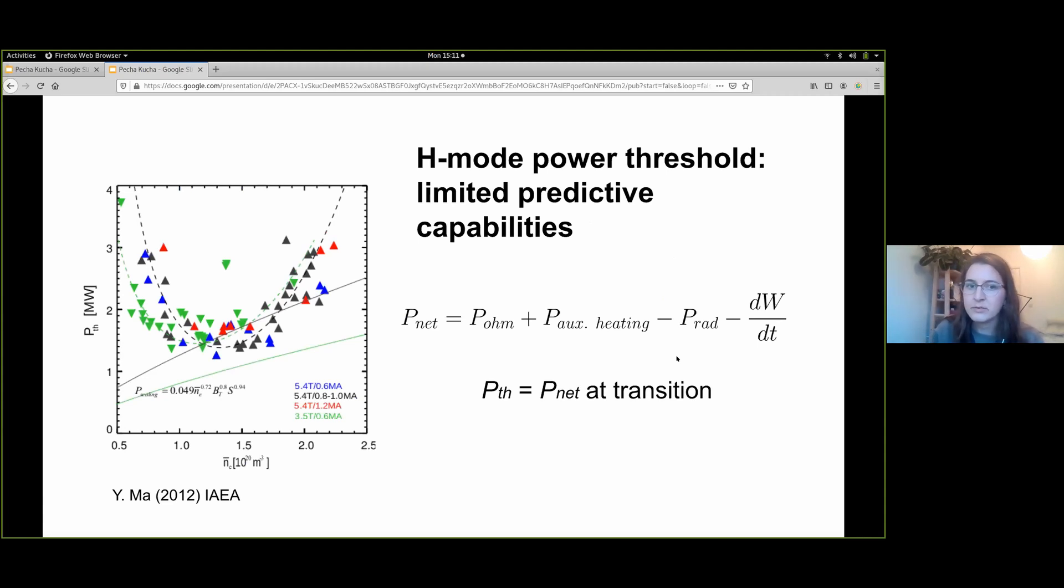Though the transition into H-mode requires a certain net power threshold, many parameter dependencies of this threshold are not well understood. Empirical scaling laws do not match the behavior well in all parameter ranges, and we cannot generally predict power thresholds for new machines or scenarios.